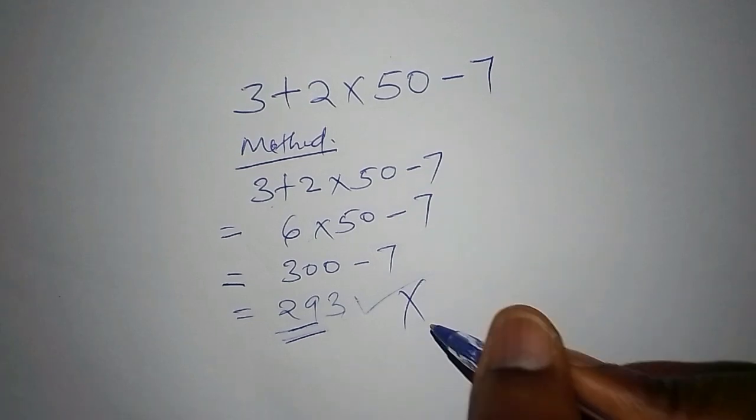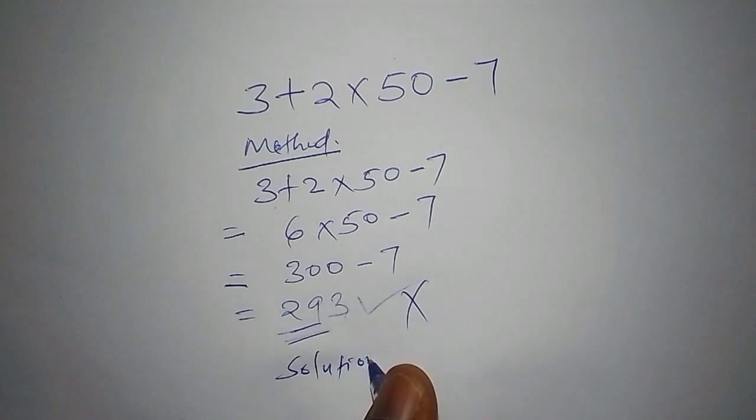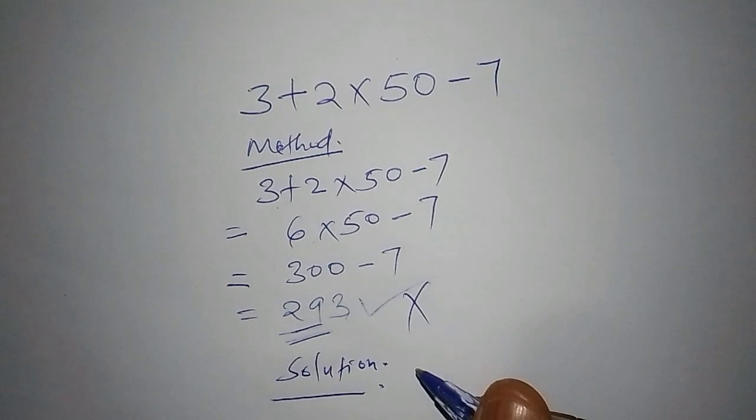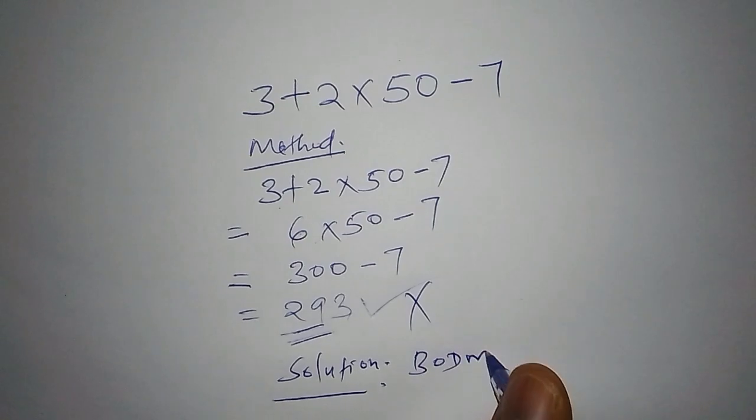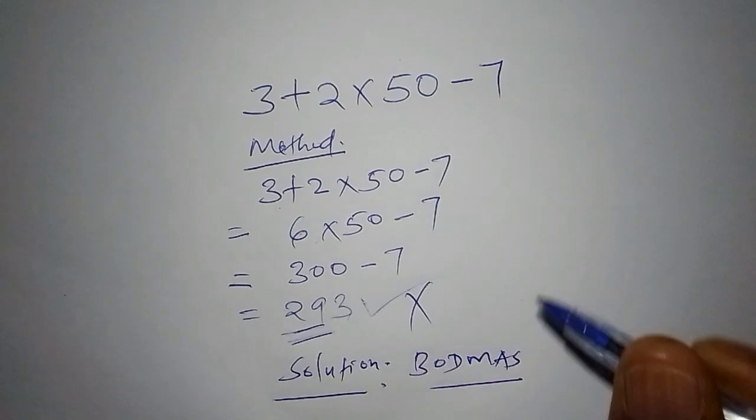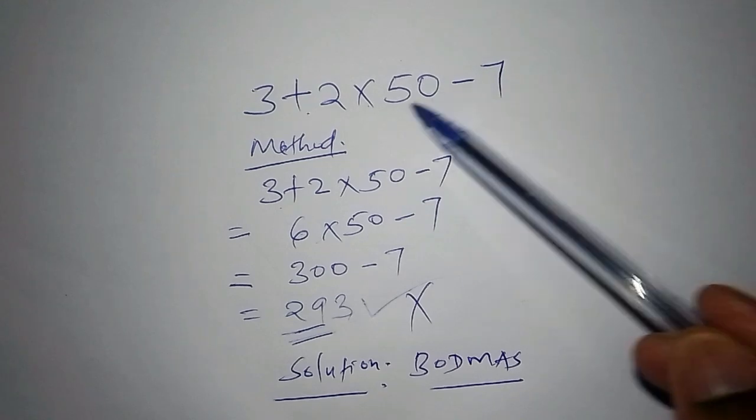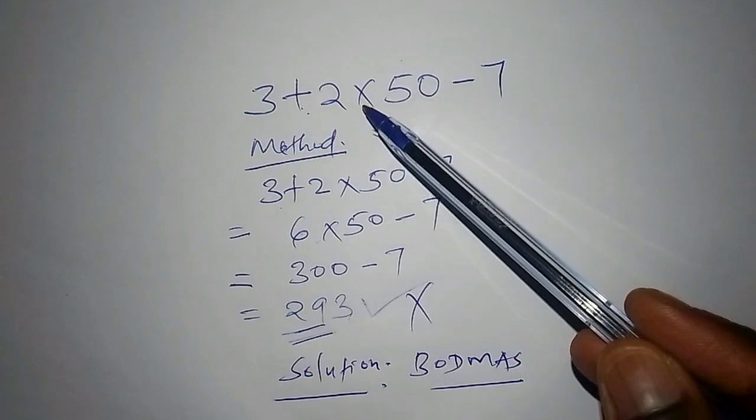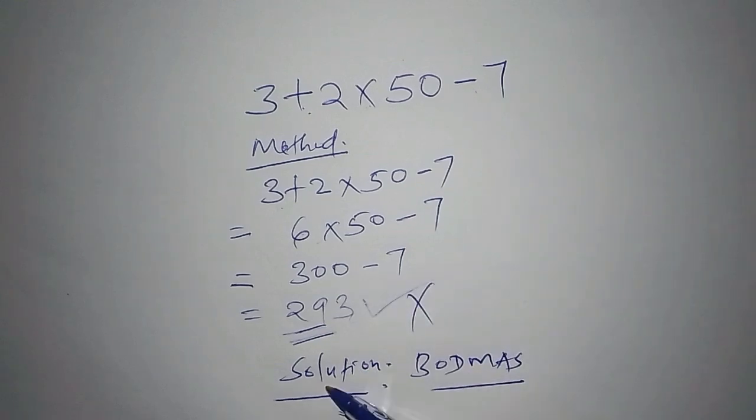Why am I saying this? Let's use the correct method. So let's move to the solution. So for us to use the correct method, we are going to have what is called BODMAS. Why do we have BODMAS? We are having BODMAS because this math problem has got various types of operations. We have the addition, we have the multiplication, and we have the subtraction. So you must follow the correct order of operations.